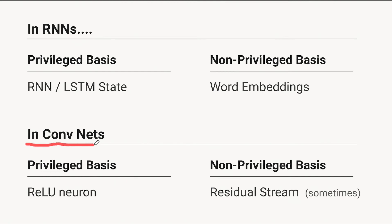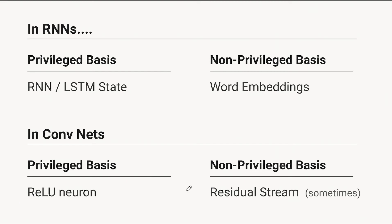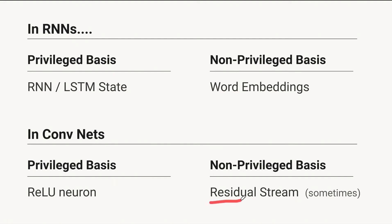In CNNs, we mostly see architectures where essentially everything is privileged, because we mostly have neurons — especially with ReLU activation functions — which really encourages a privileged basis. But we do sometimes see the residual stream, as in ResNets. Many ResNet architectures will have ReLU values on the residual stream, which causes them to have a privileged basis, but sometimes you won't have ReLU on your residual stream, in which case it will not have a privileged basis.